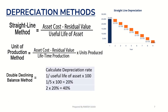The third method is the double declining balance method. The formula is: (1 divided by useful life of the asset) into 100, then multiplied by 2. For example, if the useful life is 5 years: 1 divided by 5 is 20%, multiplied by 2 equals 40%. Every year, 40% depreciation is calculated on the book value. The closing balance of the year becomes the opening balance for the next year, and 40% is again calculated on the remaining balance, and so on until the value becomes zero.